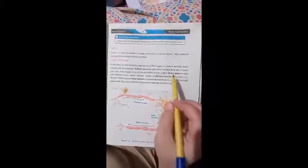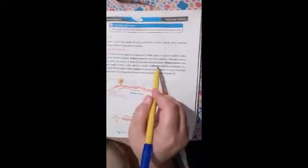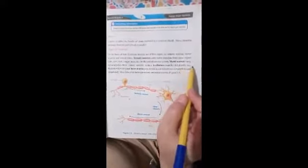For B, motor neurons carry nerve impulse from central nervous system to effectors, muscles and glands. That is the part which responds. Up to this.